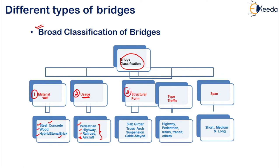A very important classification is the structural form. Based on the structural form, bridges are divided into various categories like slab, girder bridge, truss bridge, arch bridge, suspension bridge, cable-stayed bridge. All these are under the classification of structural form. There are many more, and we will see the detail of structural form in the next portion of the lesson.